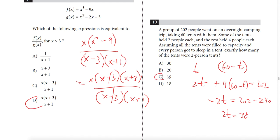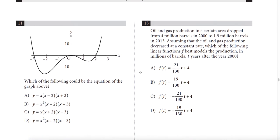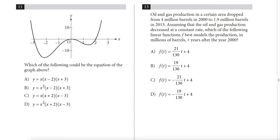Question 11: the graph shows at least three zeros. There's a rightward shift suggesting (x − 2), and a shift up of 3. The graph touches but doesn't cross the origin, meaning there's an even multiplicity — at least x². Only answer B gives x² as the factor at the origin.